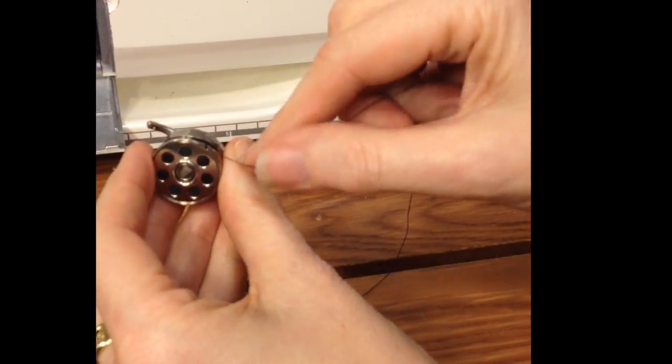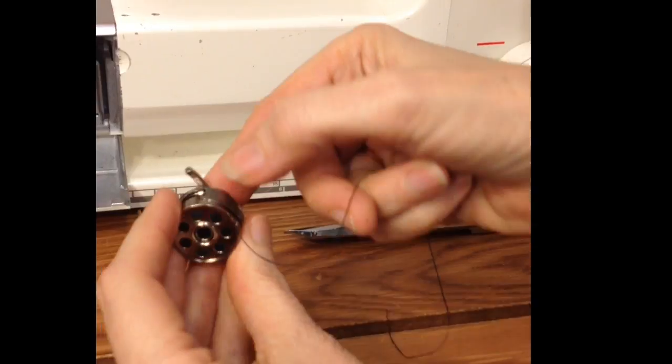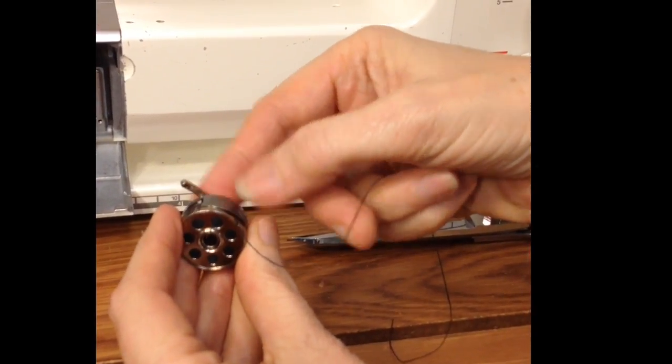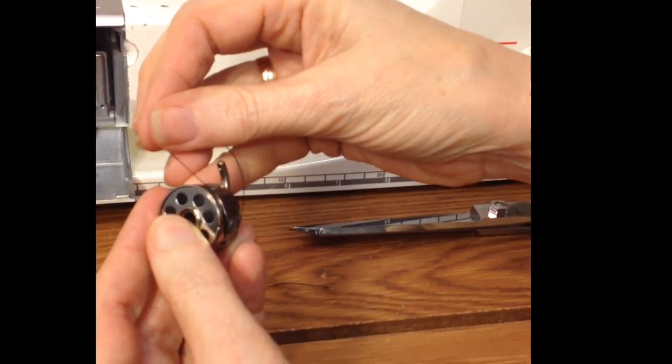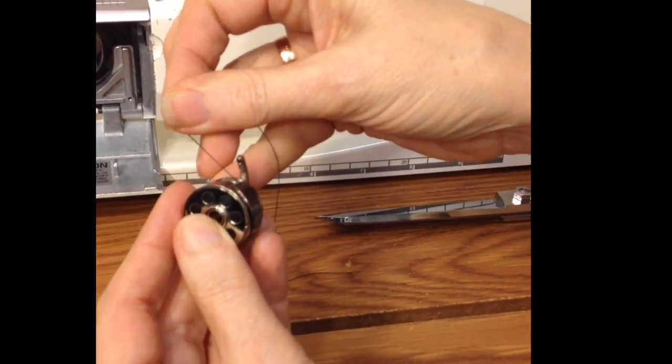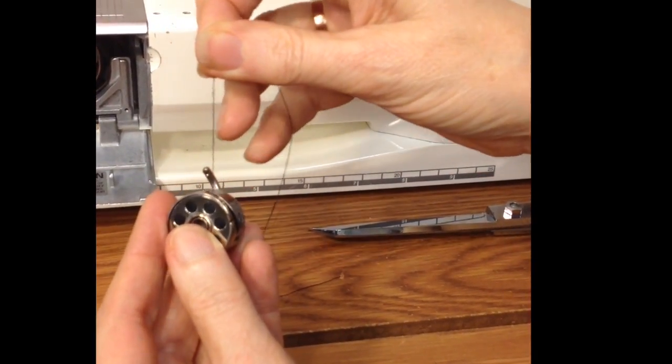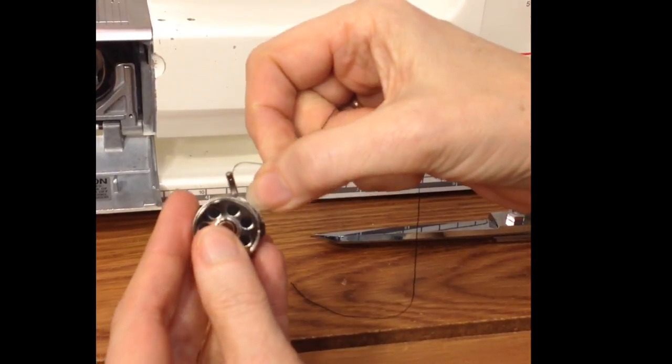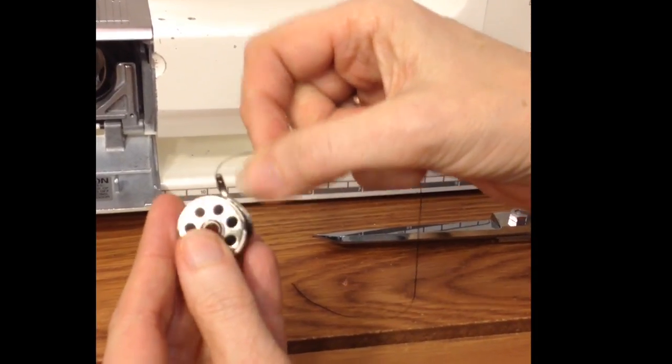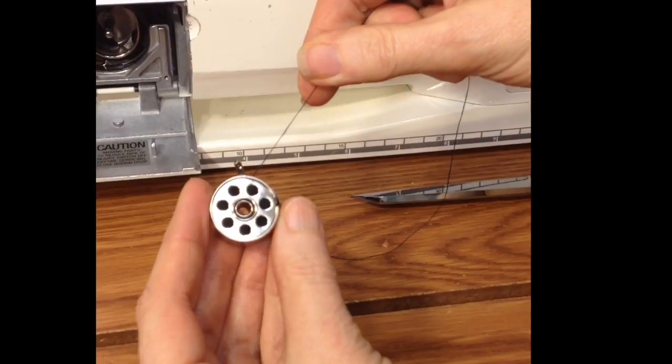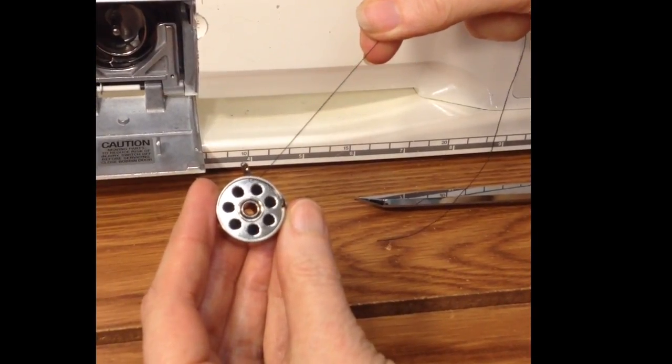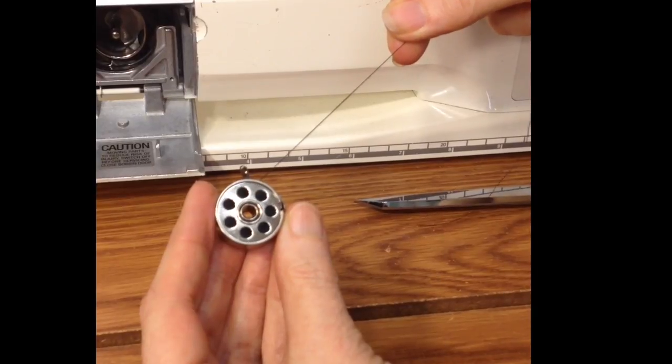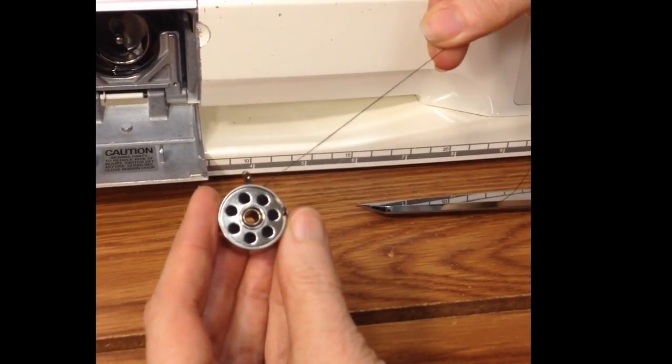On the bobbin casing, there is a metal slit and a piece of metal here that provides tension for the thread on the bobbin. So what we want to do is gently slide that thread under that metal plate and pull on the thread. When we're pulling on the thread, we can see that the bobbin is unwinding in a clockwise position. That's exactly what we want.